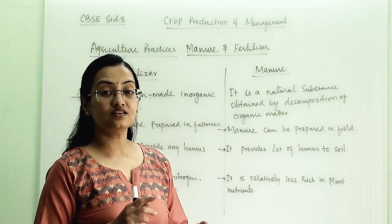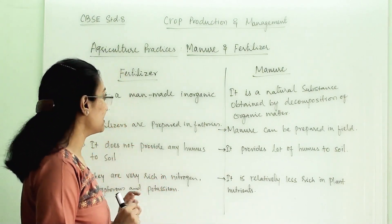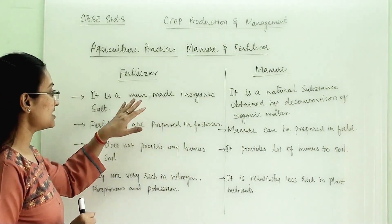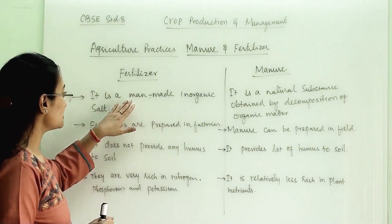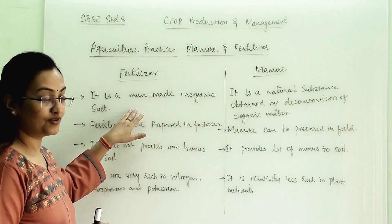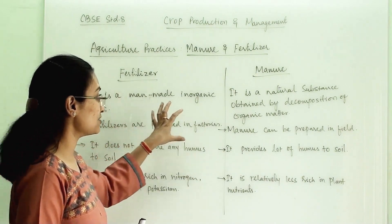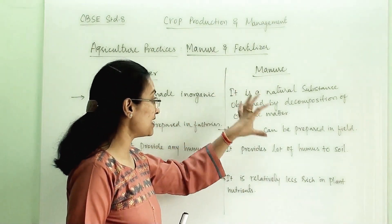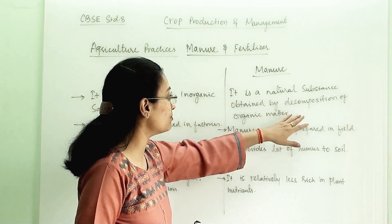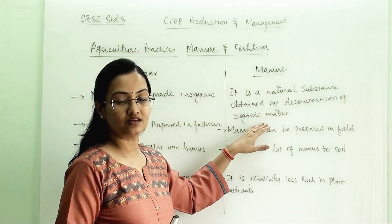Let us understand the difference between fertilizer and manure. Fertilizers, as we discussed, are manmade inorganic salts made in factories, whereas manure is a natural substance obtained by decomposition of organic matter.